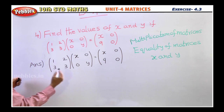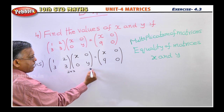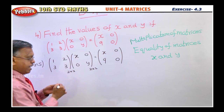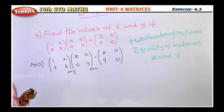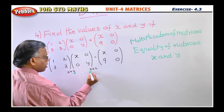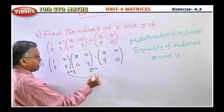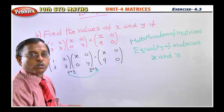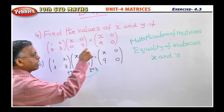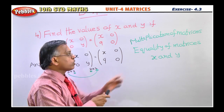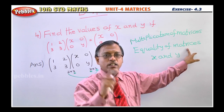What is the order of the first matrix? 2 by 2. What is the order of the second matrix? Again, 2 by 2. So the orders are the same. The first matrix has 2 columns and the second matrix has 2 rows, so multiplication of matrices is possible. After multiplication, the order of the result will again be 2 by 2. After that, you have to equate the result — that uses the two concepts: multiplication of matrices and equality of matrices.